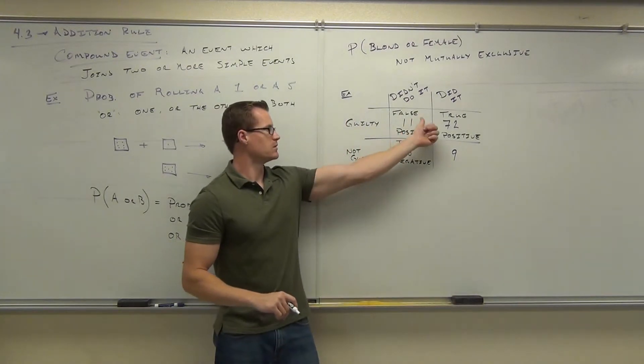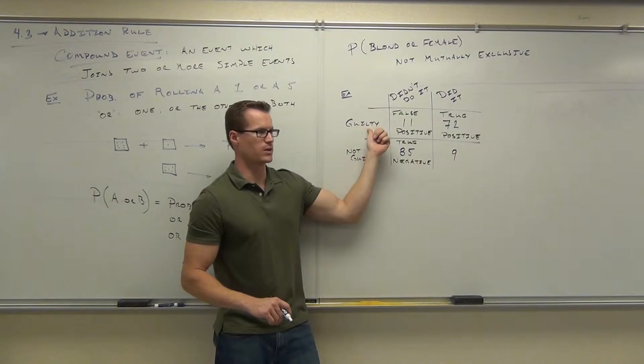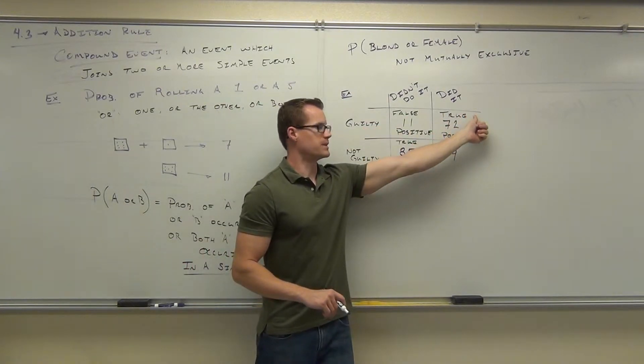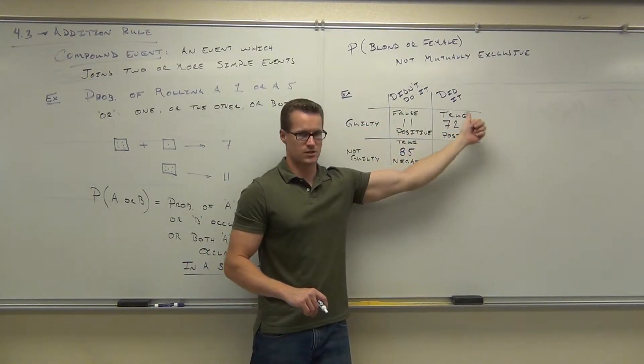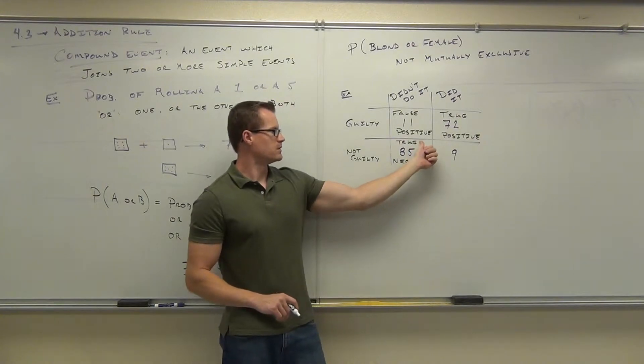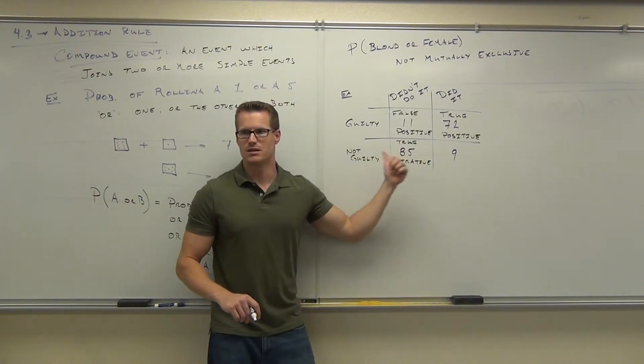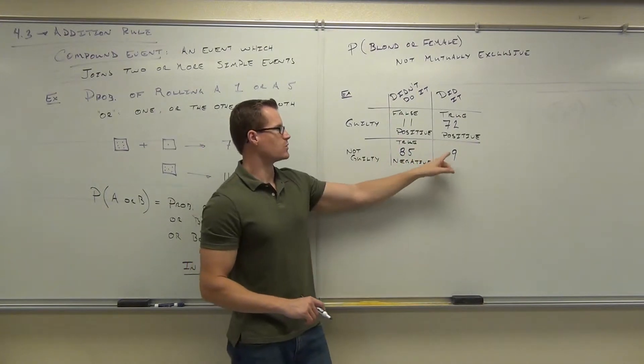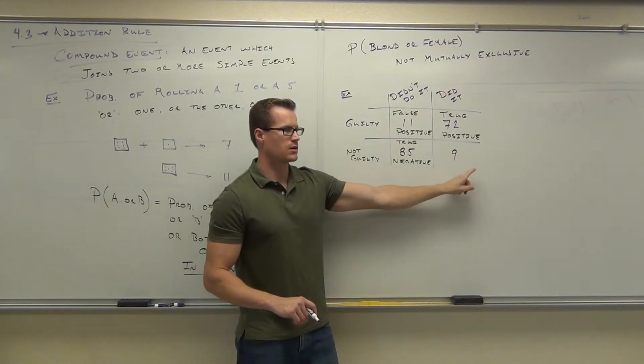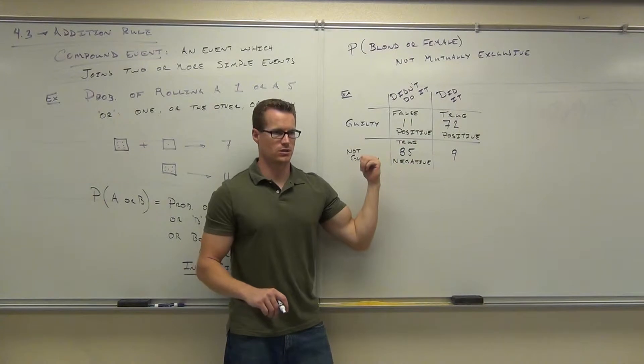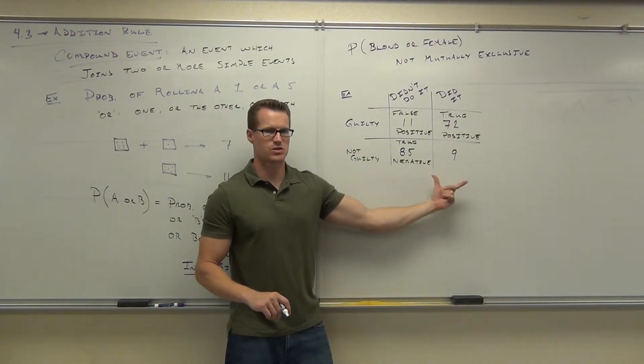So guilty, made a mistake, found guilty, false positive. Didn't make a mistake, you were found guilty. That's a true positive. Didn't make a mistake, you were actually found not guilty. That's a true negative, you were found not guilty there. The last one, you did it, you were just found not guilty. Is that the way it's supposed to work?